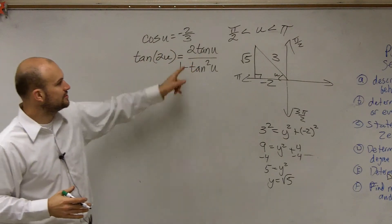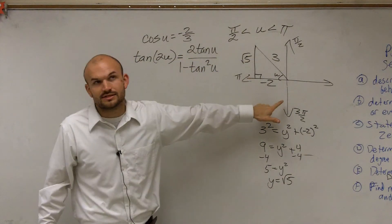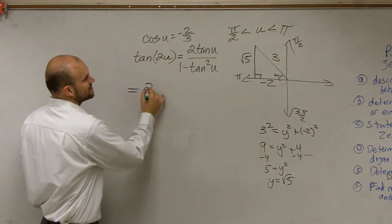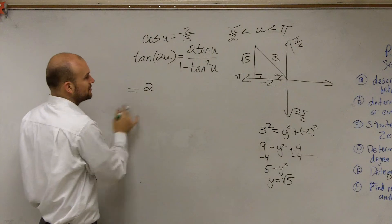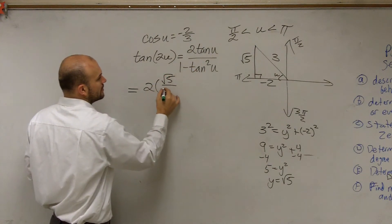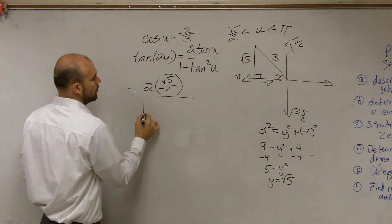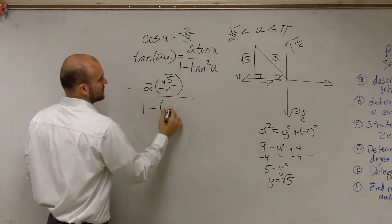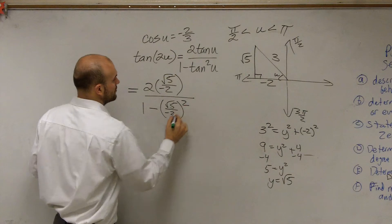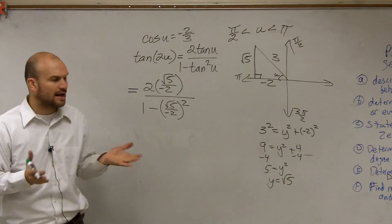All I'm simply going to do now is I know tangent of u is opposite over adjacent. So what I'm going to do is now just plug that in. So I have 2 times the tangent of my angle u, which is √5 over -2, divided by 1 minus (√5 over -2)².